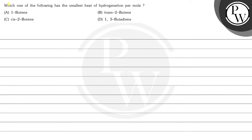Hello Bacho, let's read this question. Question says: which one of the following has the smallest heat of hydrogenation per mole? The options are 1-butene, trans-2-butene, cis-2-butene, and 1,3-butadiene.